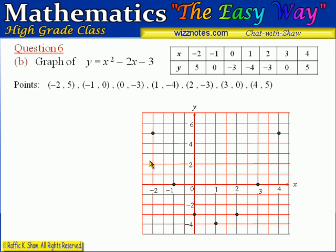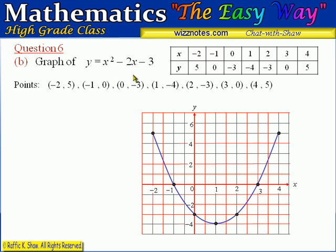Placing the points: (−2, 5), (−1, 0), (0, −3), (1, −4), (2, −3), (3, 0), and (4, 5). With all points plotted, we draw a smooth curve through them. That gives us the graph representing this quadratic function — a parabola with a minimum turning point.